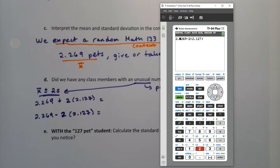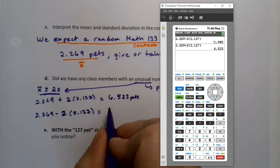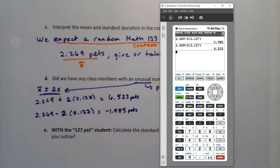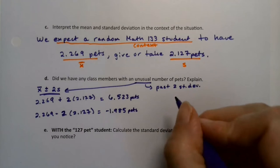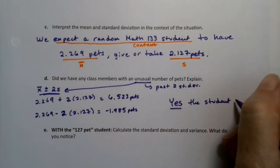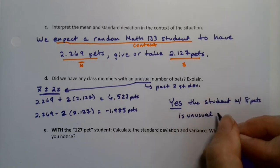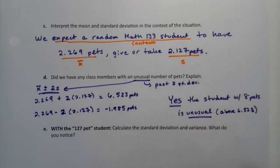Let me grab a calculator. So 2.269 plus two times 2.127. You could use the times symbol or parentheses. So 2.269 minus two times 2.127. So we get 6.523 pets and negative 1.485 pets. Well, that's not possible. So obviously, we did have one person that was unusual. Yes, the student with 8 pets was unusual because they're past 6.523.